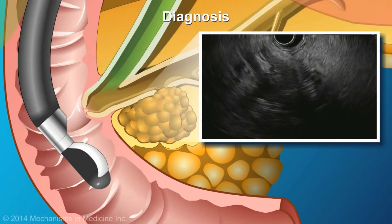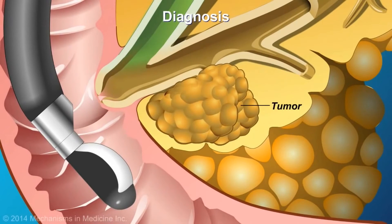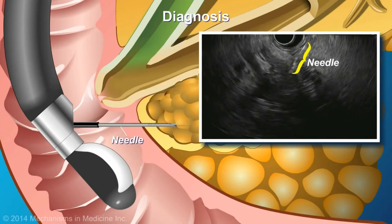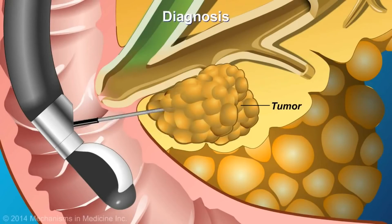Your physician interprets these images to locate abnormal tissue masses or abnormal collections of fluid. In the case of a pancreatic tumor, once identified and localized on the ultrasound image, the FNA needle extends from the scope head. The lesion is pierced, and the needle is moved back and forth several times in multiple areas of the lesion to obtain an adequate sample for analysis.